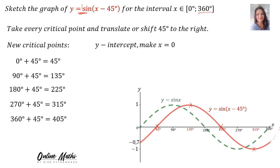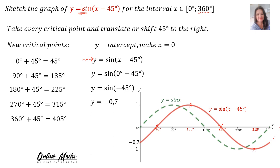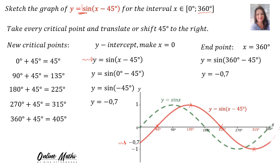We can work out the Y-intercept by making X = 0. Into the original formula, we substitute 0 and get Y = sin(0 minus 45), which is sin(−45). With your calculator, Y is minus 0.7. So the Y-intercept is the point (0, −0.7). The end point at X = 360 gives Y = sin(360 − 45) = negative 0.7. And there's your graph. It's very clear that your graph shifted 45 degrees to the right.